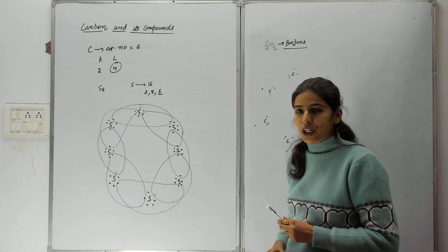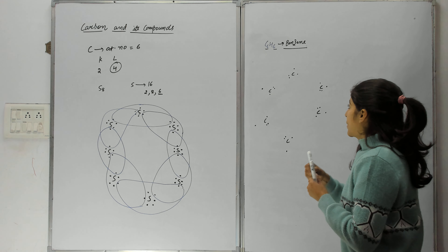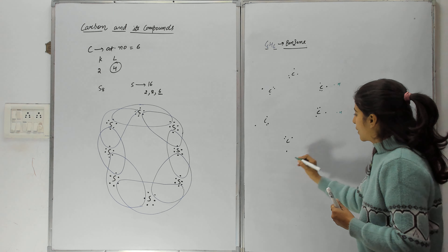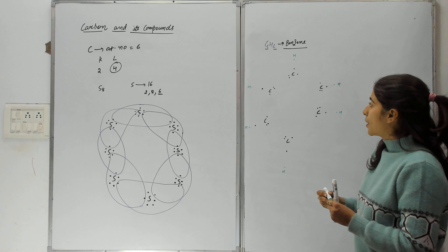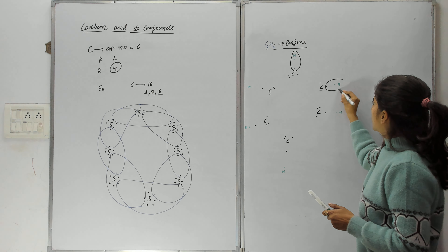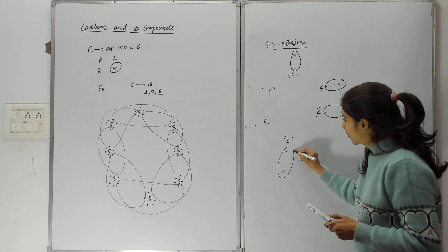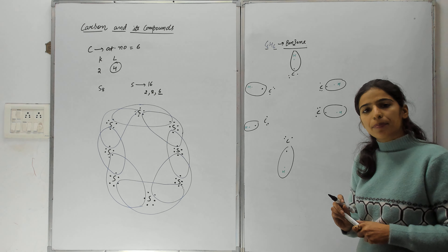Now I am going to place the hydrogen atoms here. I am placing each hydrogen on its corresponding carbon. Now, carbon's octet — there were 4 electrons originally; 1 electron is shared with hydrogen. That gives us 5 electrons, leaving 3 electrons. We will take 2 electrons from one neighboring carbon and 1 electron from the other neighboring carbon. So 8 electrons will complete the octet.